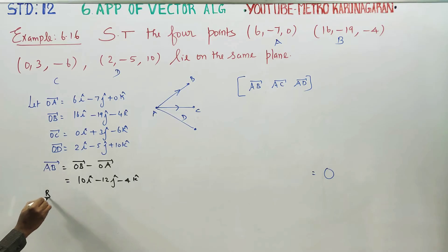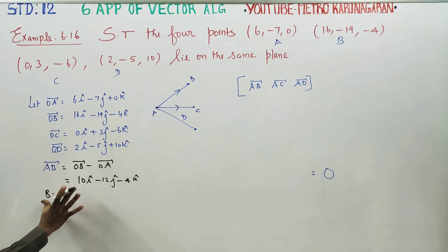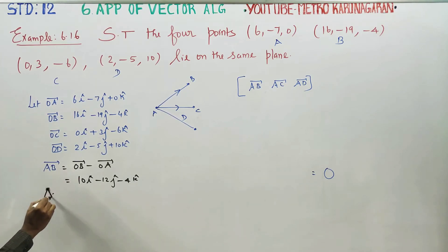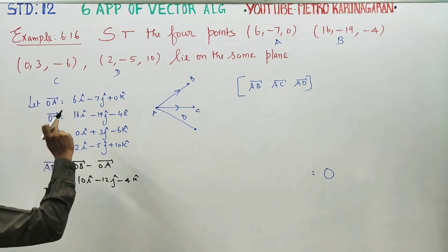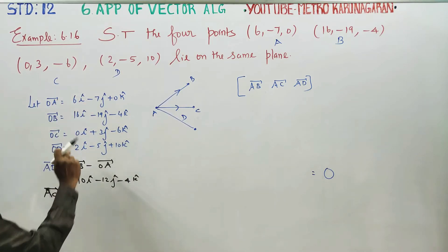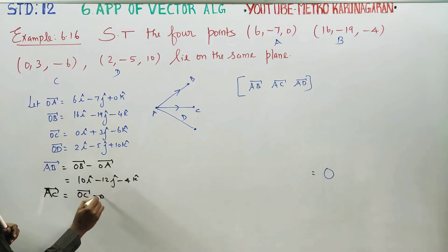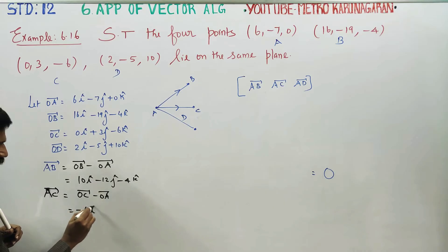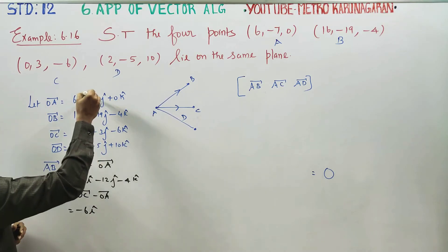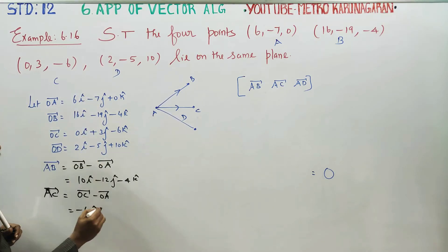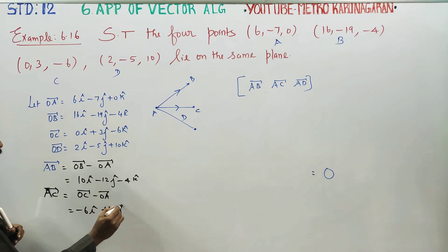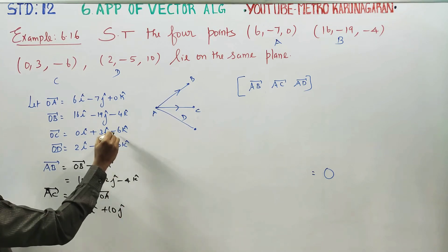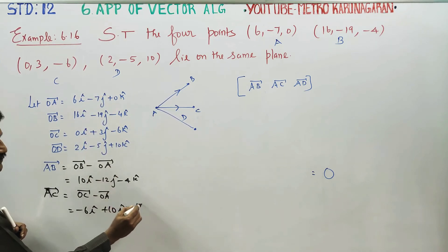AC vector is equal to OC minus OA. That is: 0 minus 6 = minus 6i; 3 minus of minus 7 = plus 10j; minus 6 minus 0 = minus 6k. So AC vector is minus 6i plus 10j minus 6k.